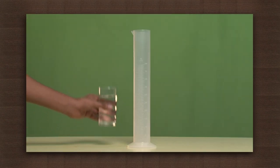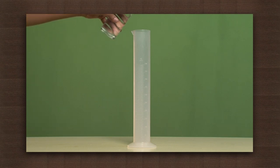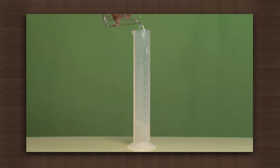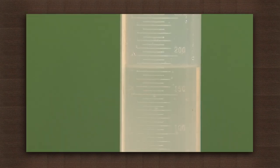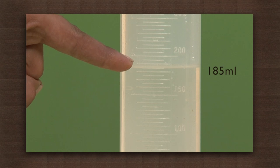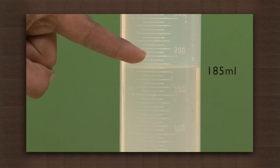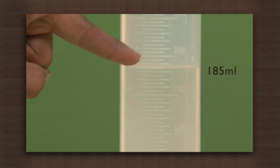Let's pour a glass full of water into the measuring cylinder. See how much water was there in the glass. Note the level of the water and the corresponding reading. There was 185 millilitres of water in the glass.